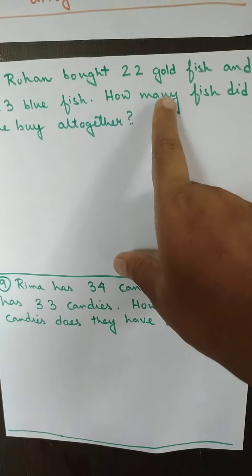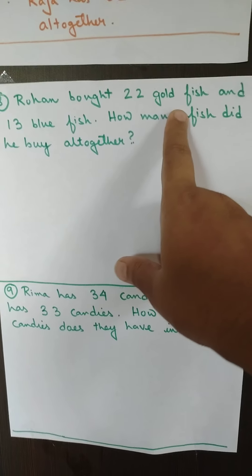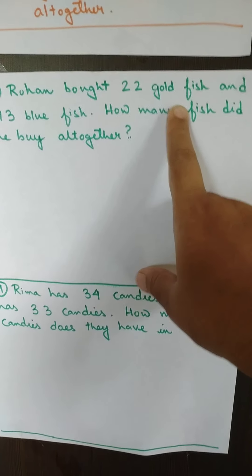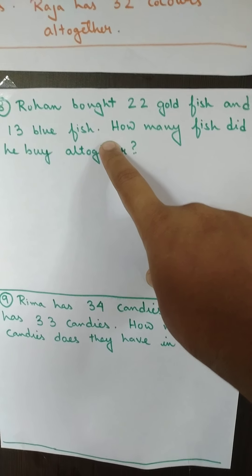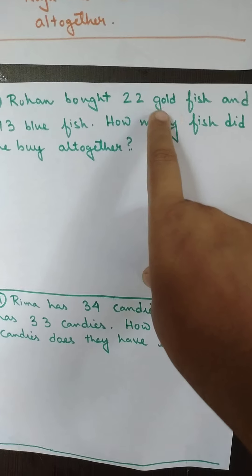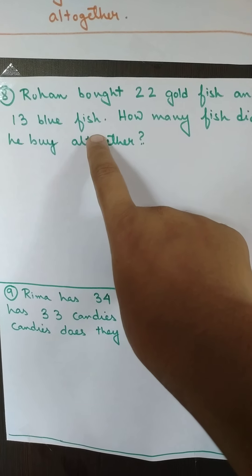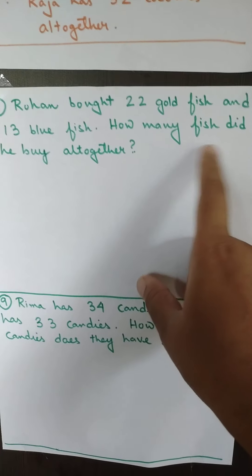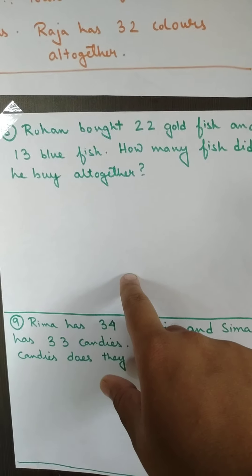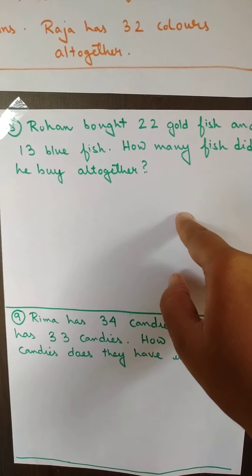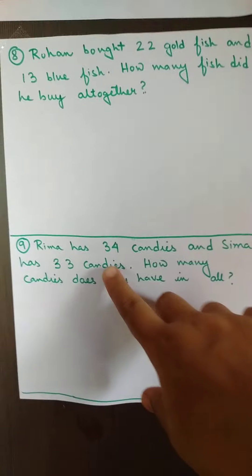Number eight: Rohan bought 22 goldfish and 13 bluefish. Number of goldfish is 22, number of bluefish is 13. Now how many fish did he buy altogether? Therefore, total number of fish — you have to add these two things. The answer is 35.